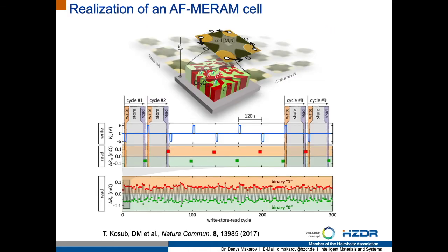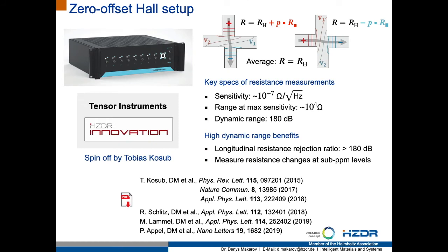The MRAM operation is demonstrated in this slide, where electric field pulses are used to write information into the chromium oxide. The information can be stored in the antiferromagnetic order parameter and read out using the platinum electrode, and you can repeat this many times, mimicking the operation of conventional MRAM. To enable such measurements, we rely on a zero-offset Hall preset of the tensormeter device, which allows us to reject parasitic leakage of longitudinal resistances in the transversal resistance channel, giving us the pure transversal resistance related to the antiferromagnetic order parameter of the chromia thin film.